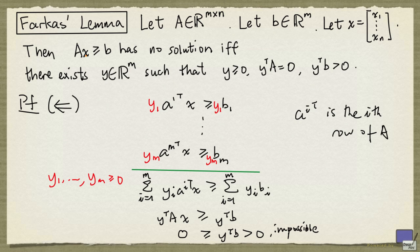A y that satisfy this condition basically certifies that the system has no solution, and we call such a y a certificate of infeasibility.